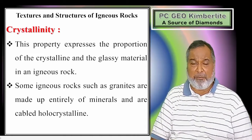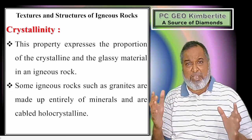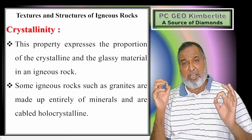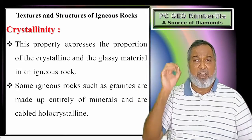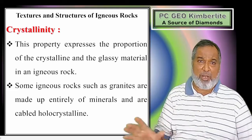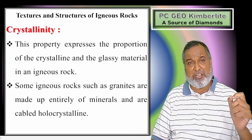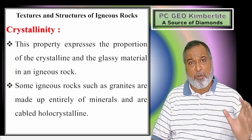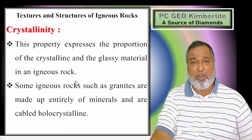Now first we will see Crystallinity. What is crystallinity? It is the property expressed by the proportion of crystals to glass. If a rock contains 100% crystals and there is no glass, then it is called Holocrystalline - 'holo' means 100%, crystalline means crystals. The best example of a holocrystalline rock is granite.